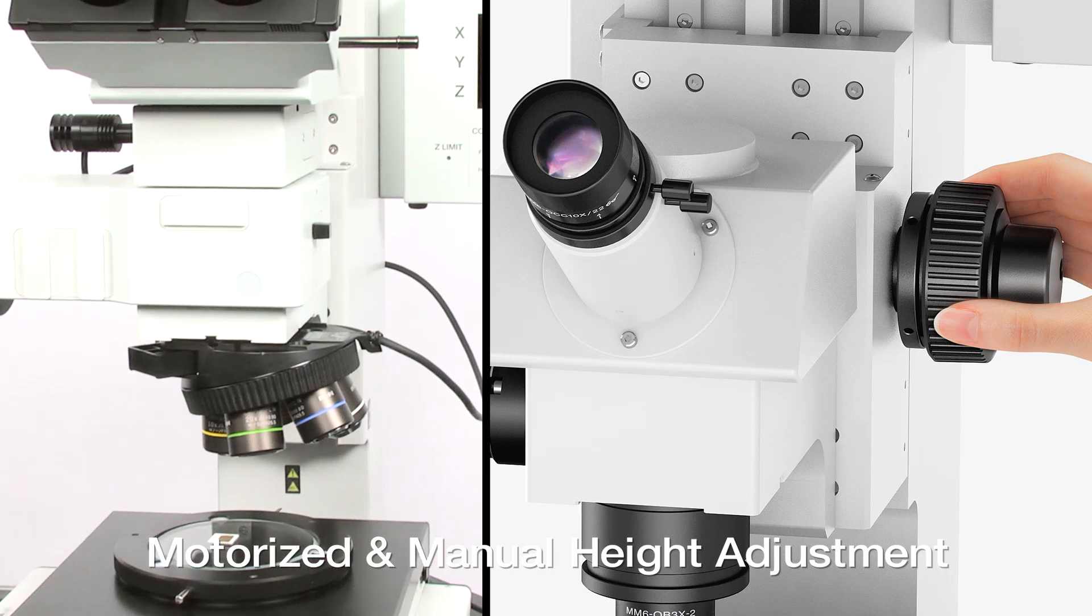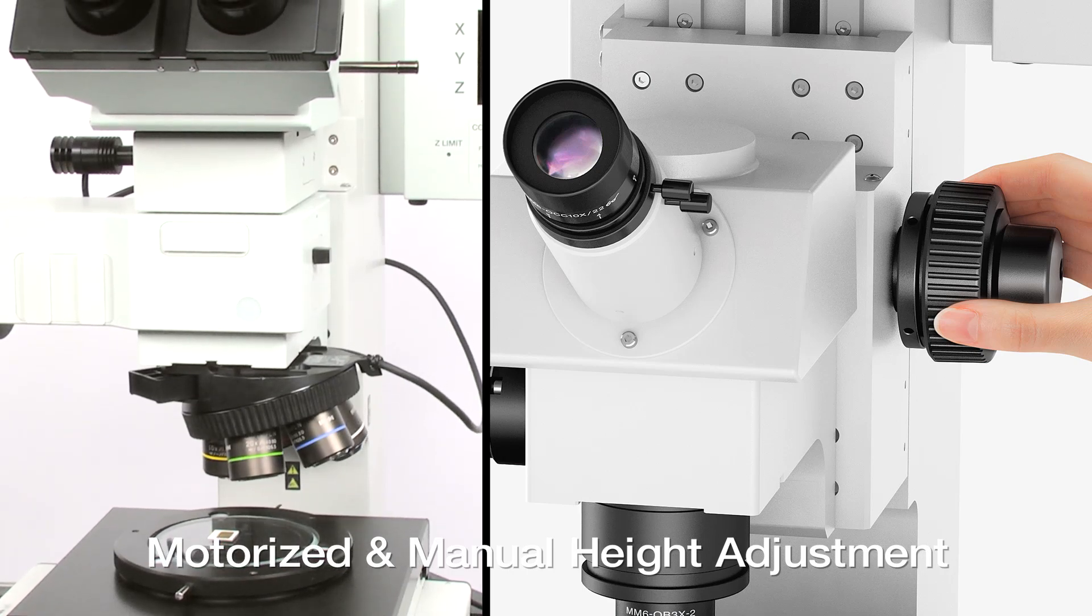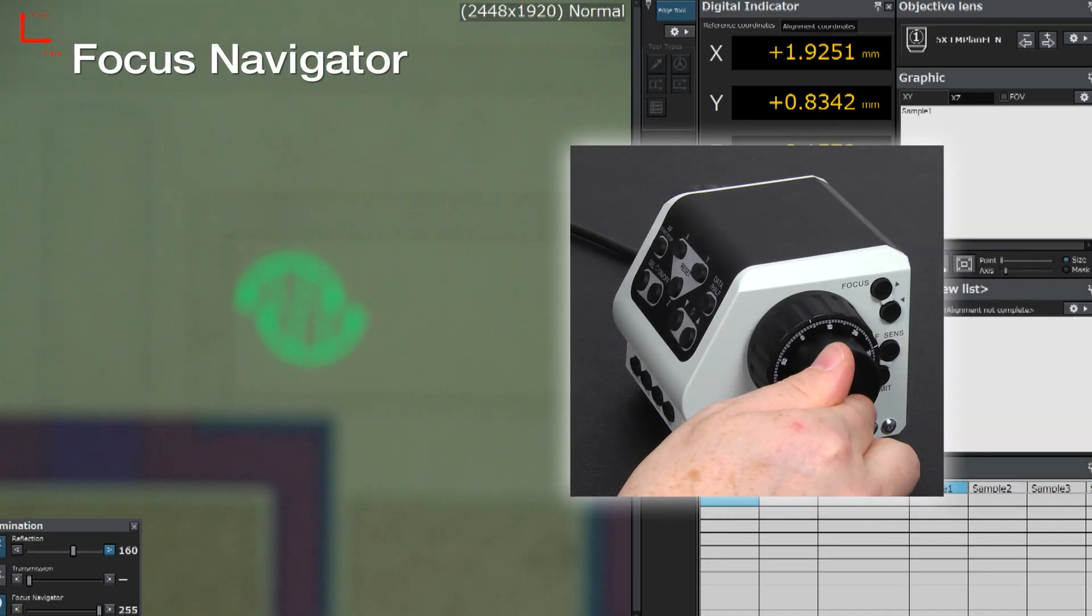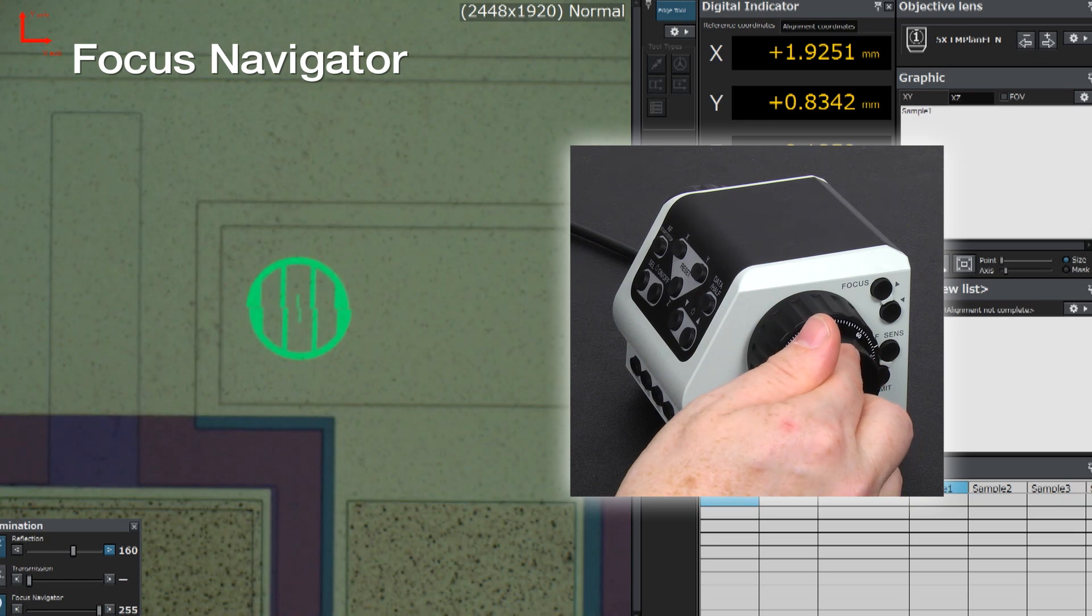The STM-7 offers both manual and motorized height measurement. To improve reproducibility, a focus navigator can be added to the system.